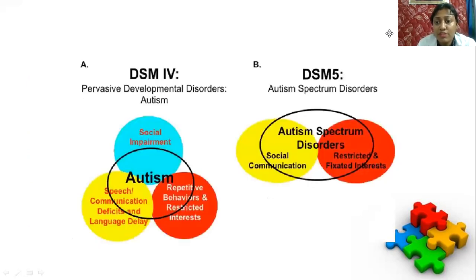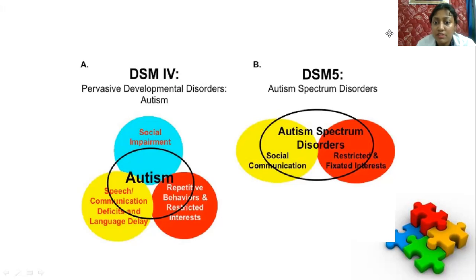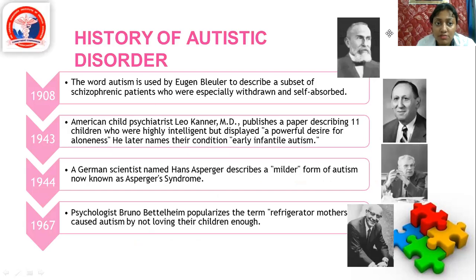In DSM-5, the criteria are social communication and restricted, fixated interests. Previously it was speech and communication deficits and language delay, but now it has come to social communication and restricted and fixated interests.